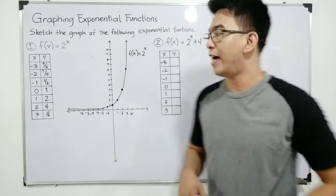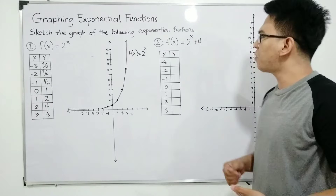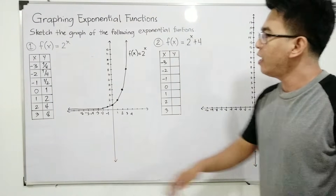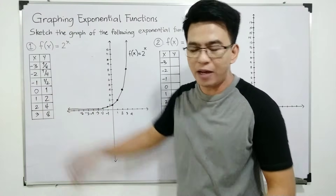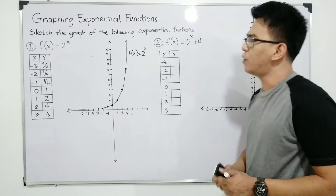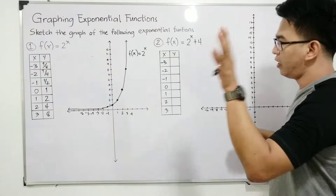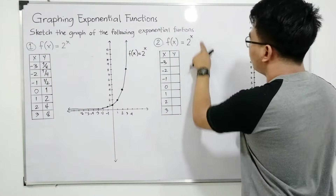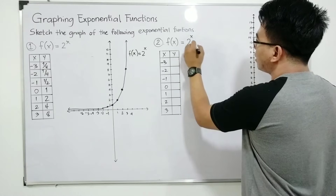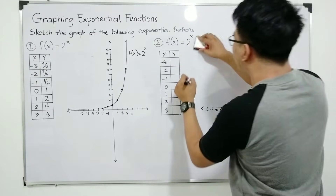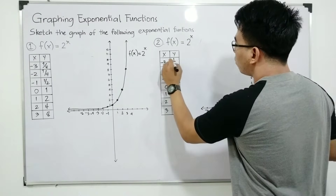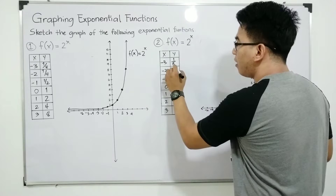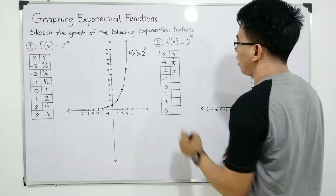Now let's move on with item number 2. For item number 2, hindi na natin kailangan pahirapan yung sarili natin. Why? Kasi meron na tayo nito. What I will do — kung wala itong plus 4, we have f(x) = 2 raised to x. Kung wala yan, ito yung magiging 1 over 8. Tama? Ito yung magiging 1 over 4.